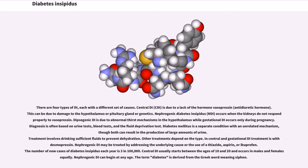Nephrogenic diabetes insipidus occurs when the kidneys do not respond properly to vasopressin. Dipsogenic DI is due to abnormal thirst mechanisms in the hypothalamus while gestational DI occurs only during pregnancy. Diagnosis is often based on urine tests, blood tests, and the fluid deprivation test.